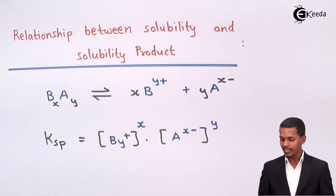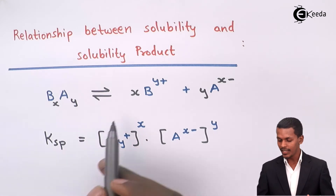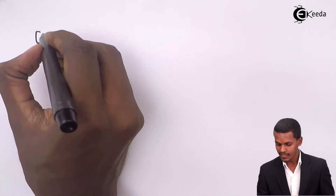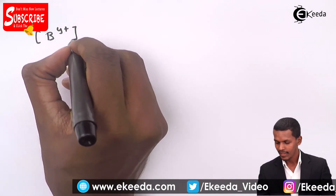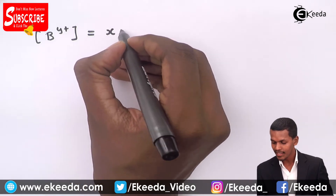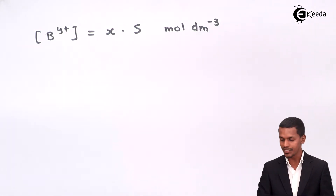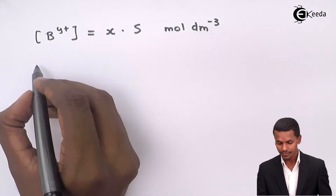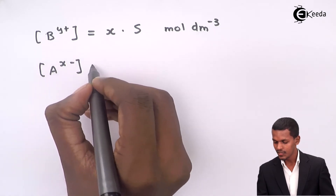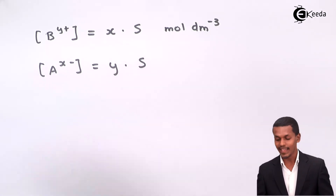Talking about solubility: the concentration of B^(y+) is nothing but the product of its stoichiometry, which is x, times the solubility s (in mol/dm³). Similarly, the concentration of A^(x−) equals the stoichiometry y times the solubility s in mol/dm³.